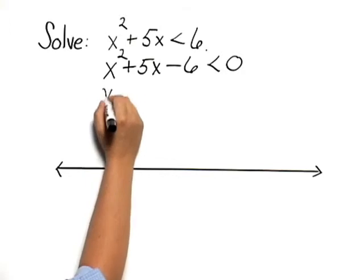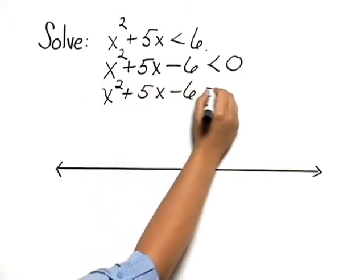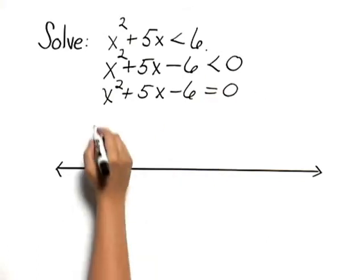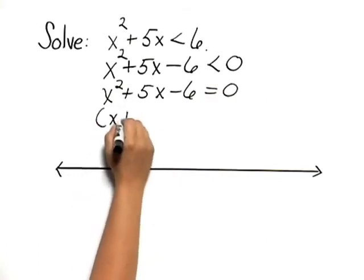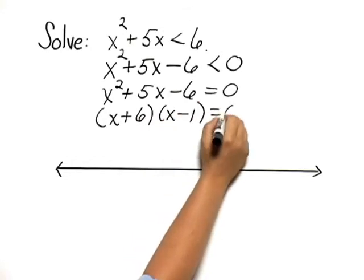Let's first find where x squared plus 5x minus 6 equals 0. Now if we factor, we get x plus 6 times x minus 1 equals 0.